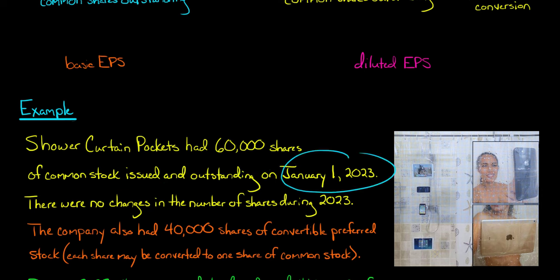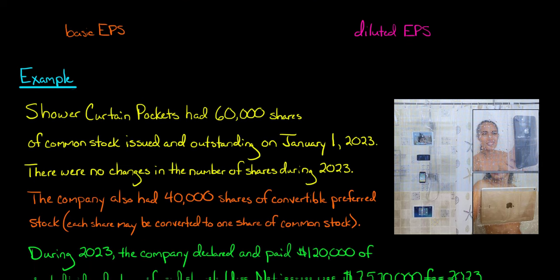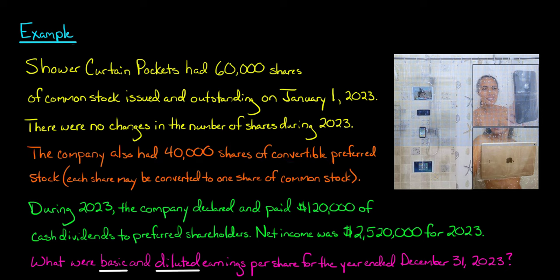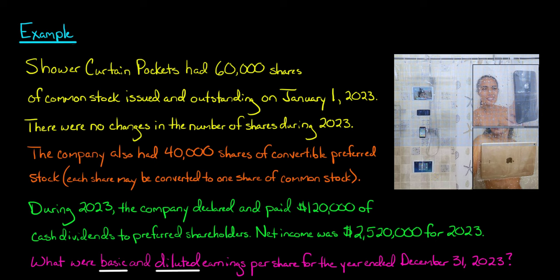Let's assume there were no changes in the number of common shares during 2023 — they didn't issue or repurchase any common shares. But this company also has convertible preferred stock outstanding: 40,000 shares of convertible preferred stock, and each one of those 40,000 shares can be converted to one share of common stock. So if everyone converted, there would be 40,000 additional new shares of common stock — a one-to-one ratio.